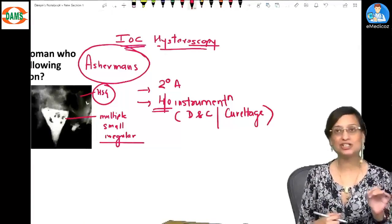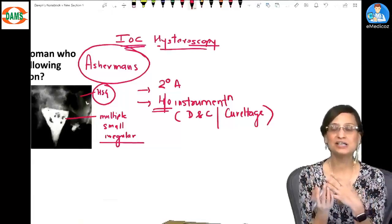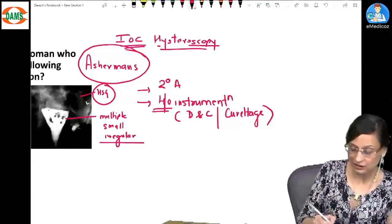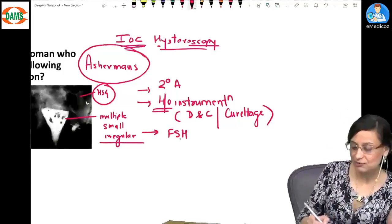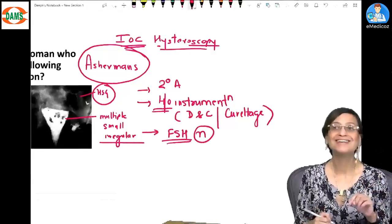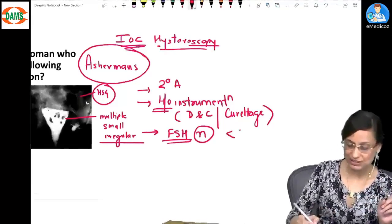So history of instrumentation, the preceding history would be a D&C or a curettage. Okay? Third important thing AIMS repeatedly confuses: FSH levels are going to be normal. Yes, what are the normal values? Less than 10 international units.